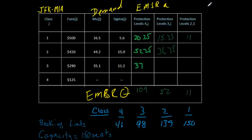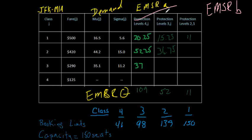Hi, welcome back. In this video we're going to talk about EMSR-B. In the last three videos we went through the calculations for EMSR-A, and at the end we noted that there are actually two versions: EMSR-A and B. EMSR-B was developed to address an issue discovered with EMSR-A. In some cases EMSR-A can result in protection levels that are larger than the optimal solution — higher than they should be if we're trying to maximize revenue. The reason occurs from the way we aggregate protection levels for individual pairs of fare classes to come up with one protection level for a set of fare classes.